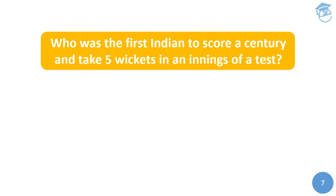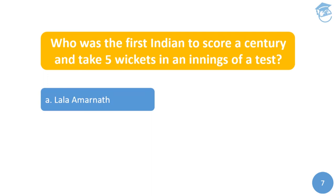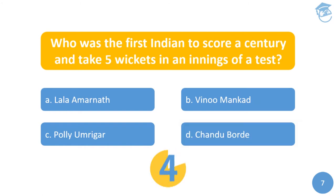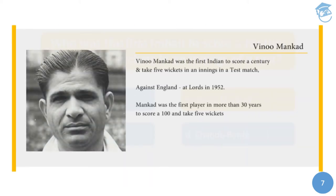The seventh question: Who was the first Indian to score a century and take five wickets in an innings of a test match? Options are: Lala Amarnath, Vinoo Mankad, Polly Umrigar, or Chandu Borde. The answer is Vinoo Mankad. He achieved this against England at Lord's in 1952, becoming the first player in over 30 years to score a hundred and take five wickets in the same test match — and the first Indian to do so at Lord's.